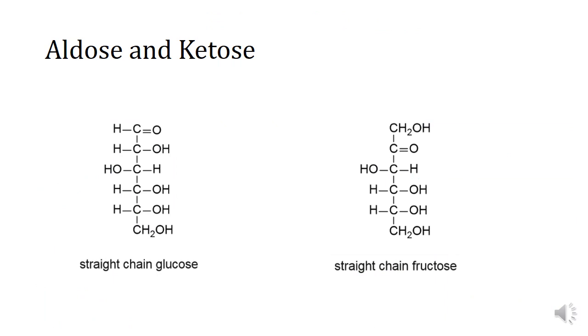Aldose and ketoses are the most important parts for IB chemistry. These are straight out of your data book. You're given the straight chain forms of these two guys. You're given that this has that double bonded oxygen at the end, and this has my double bonded oxygen in the middle of my chain. That makes this an aldose, and it makes this a ketose.